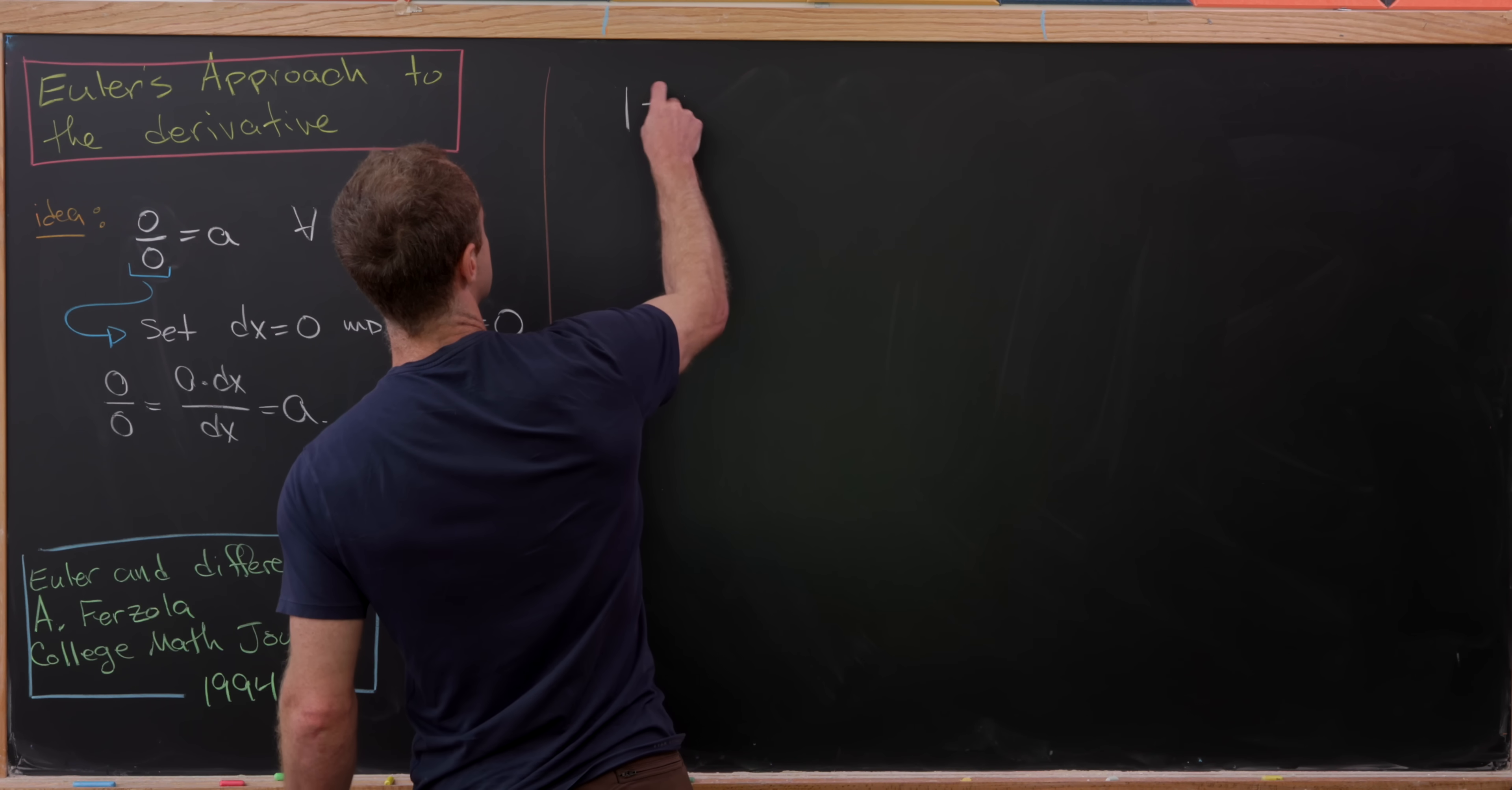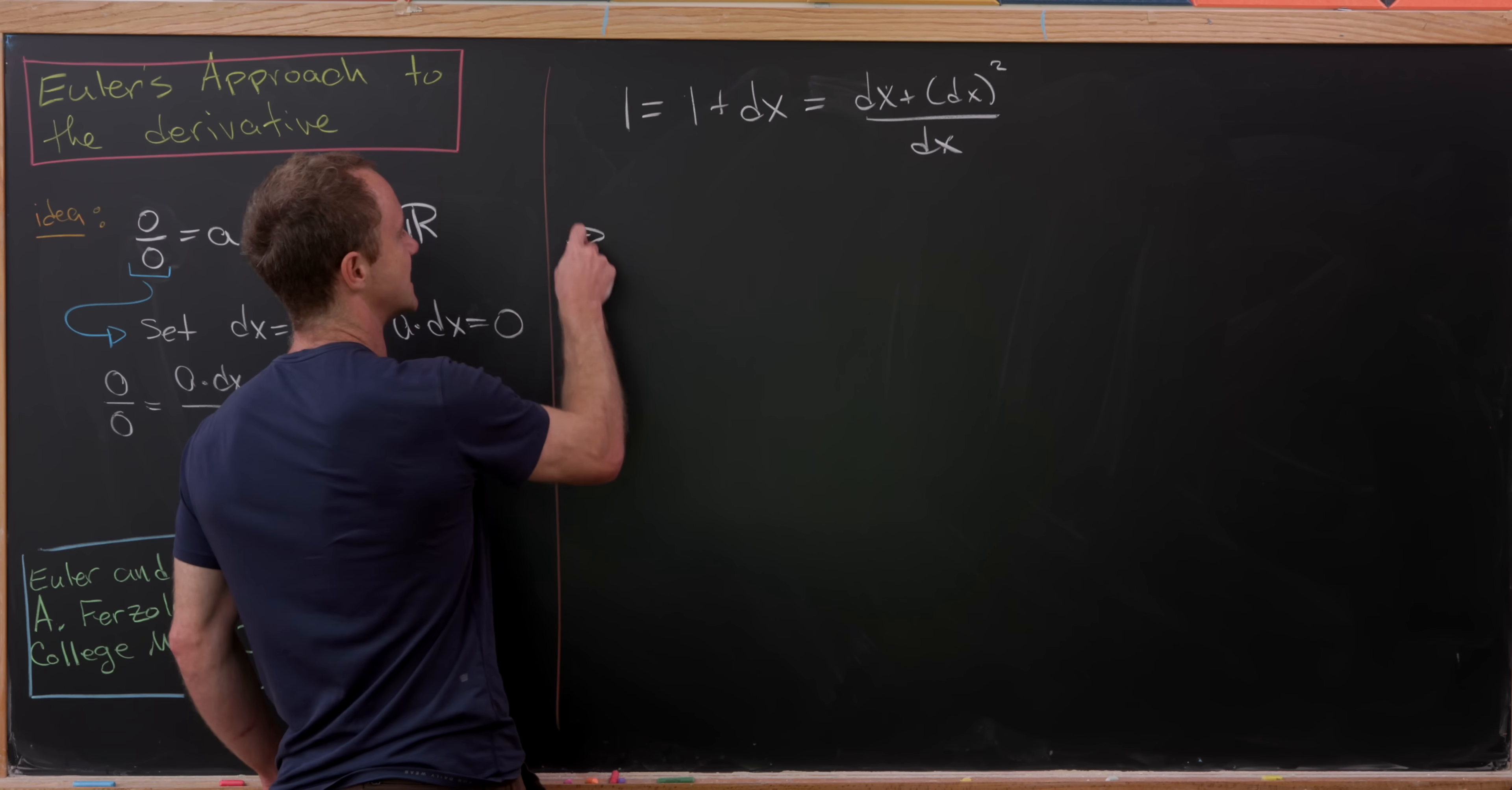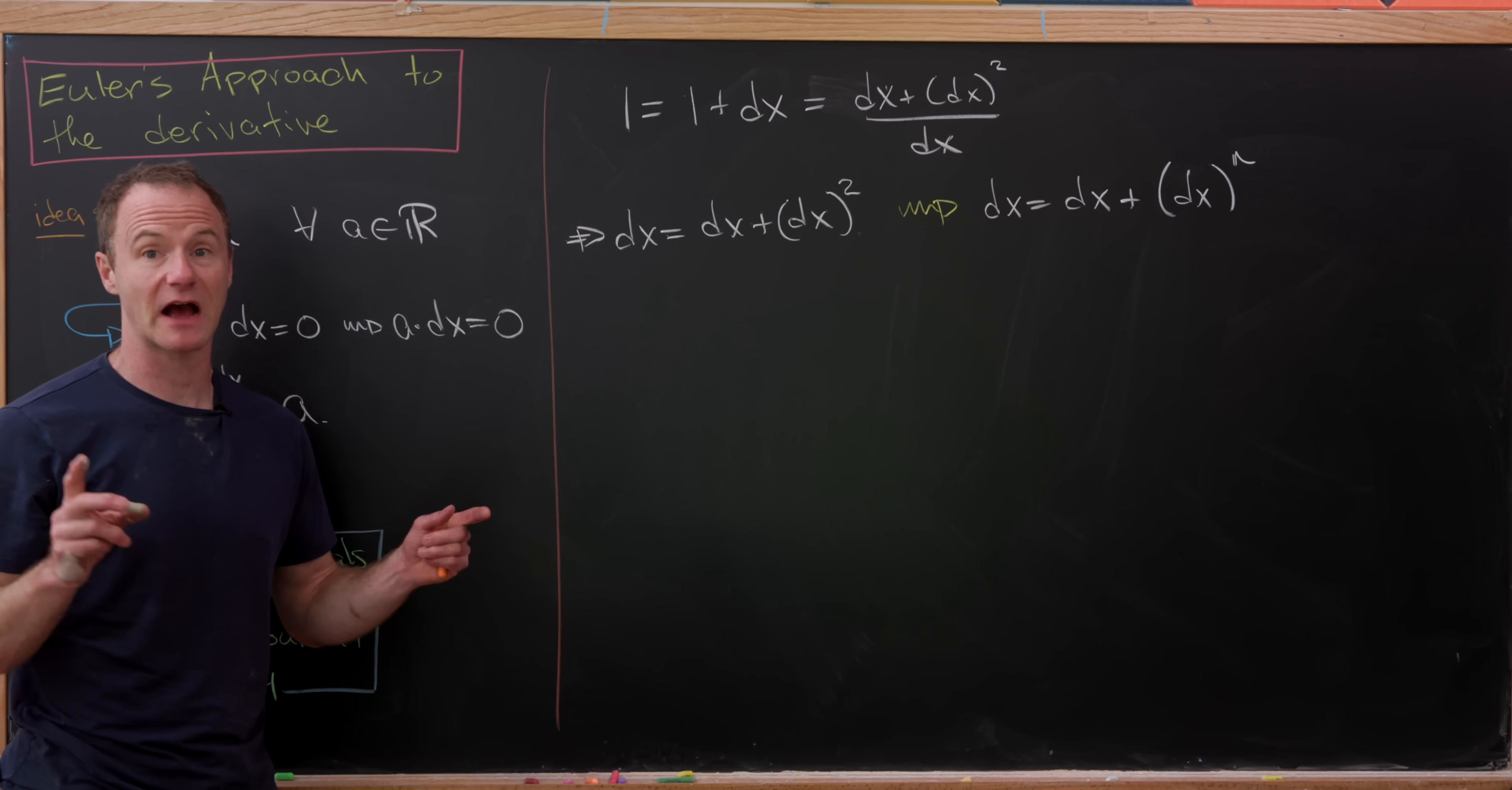And then, where could we go from this point? Well, let's notice that one is equal to one plus zero, but I'll write zero as dx. But then, multiplying this right-hand side by the number one in the form of dx over dx will give us dx plus dx squared over dx. So, that's another way of writing the number one. But then, we could maybe cross-multiply by dx, and we'll see that dx is equal to dx plus dx squared. And then, through a similar calculation to this, we could show that dx is, in fact, equal to dx plus dx to the nth power. So, what that means is we can essentially disregard the higher powers of this dx object. And that's what Euler did. And that actually makes a lot of our calculations work.